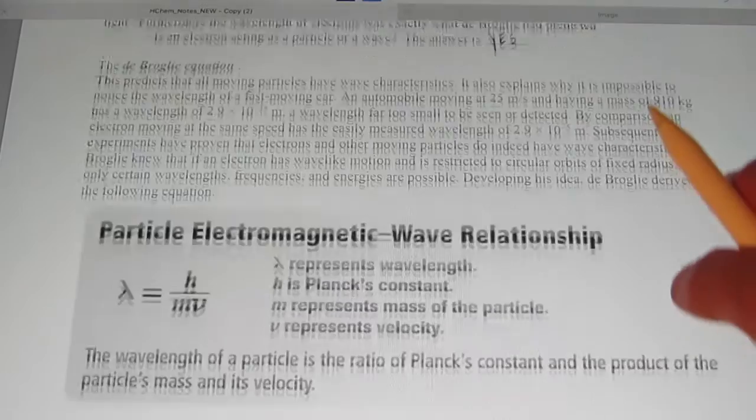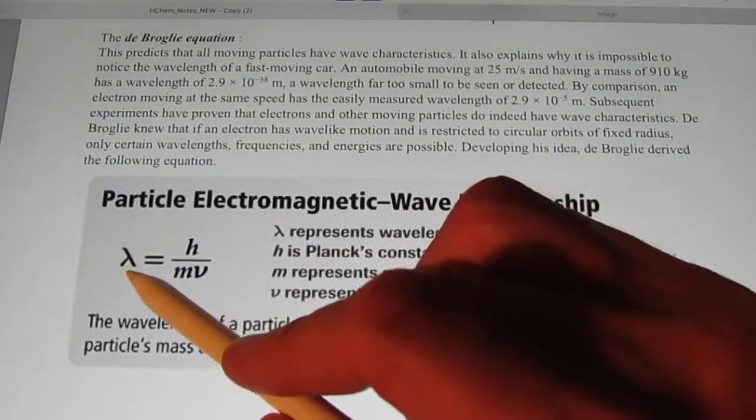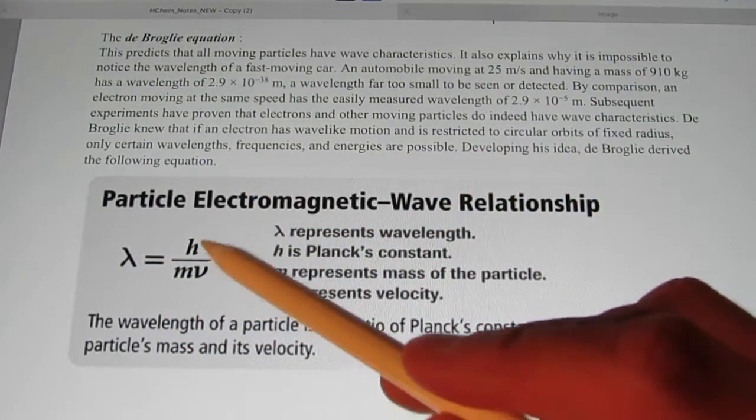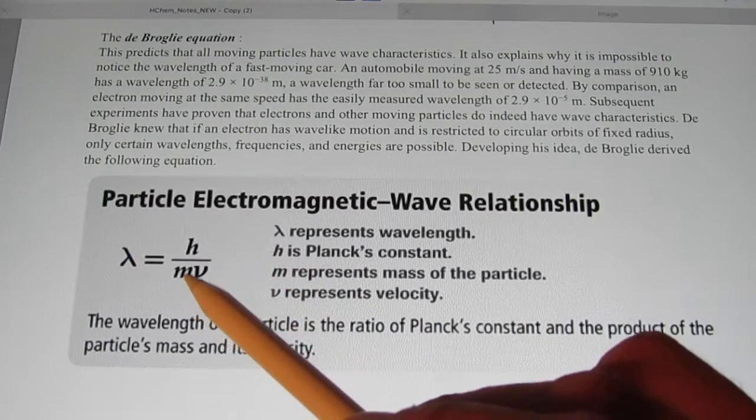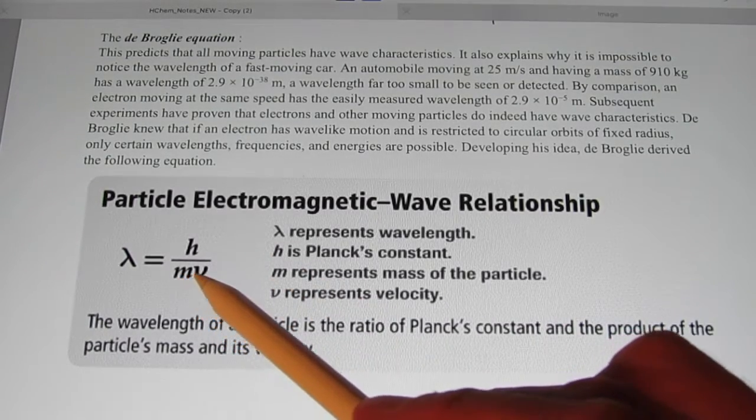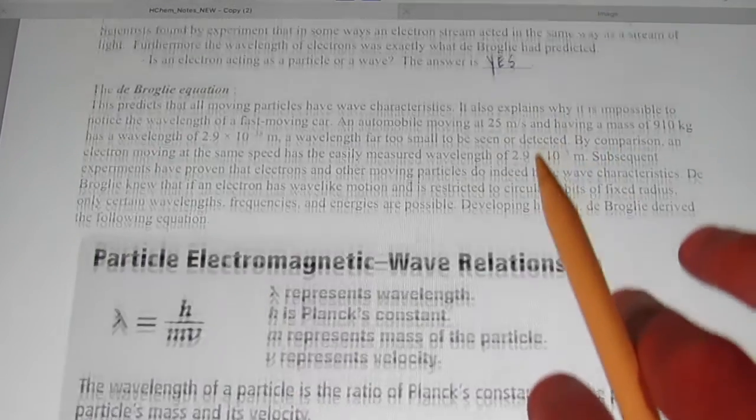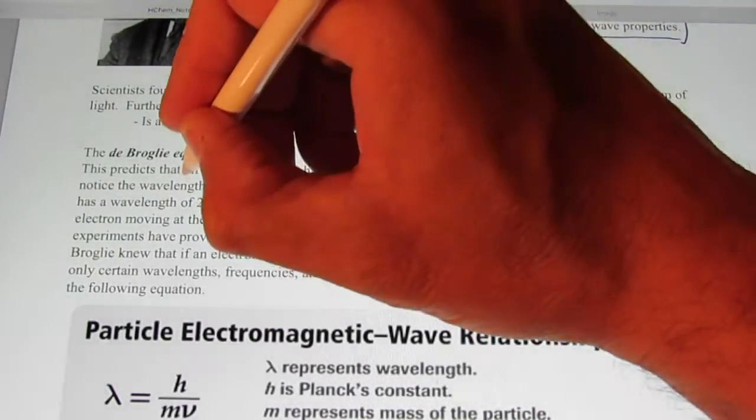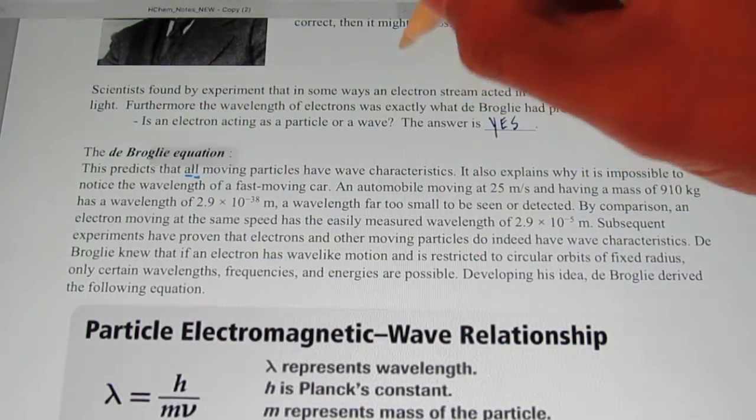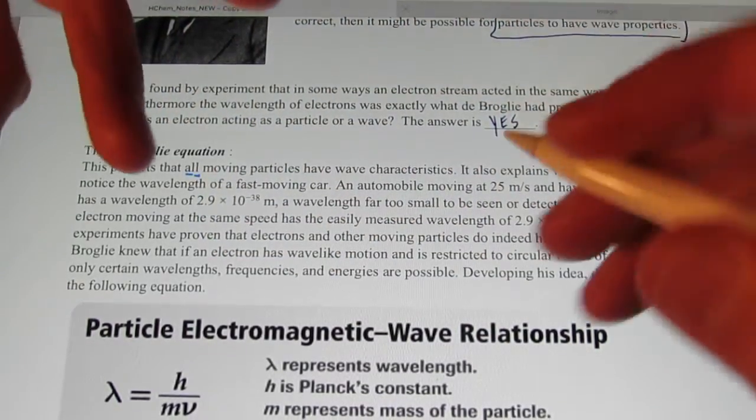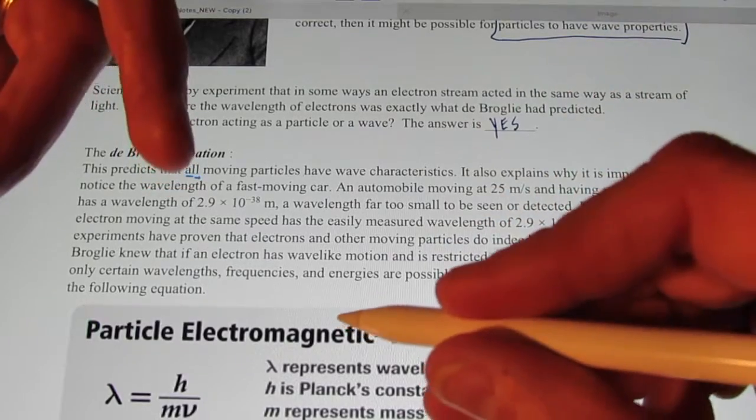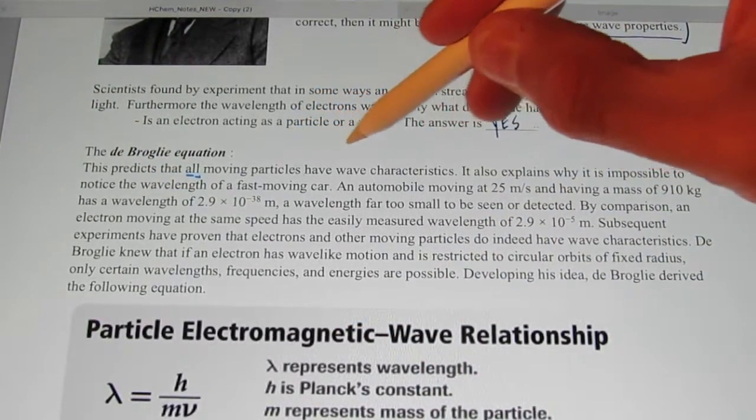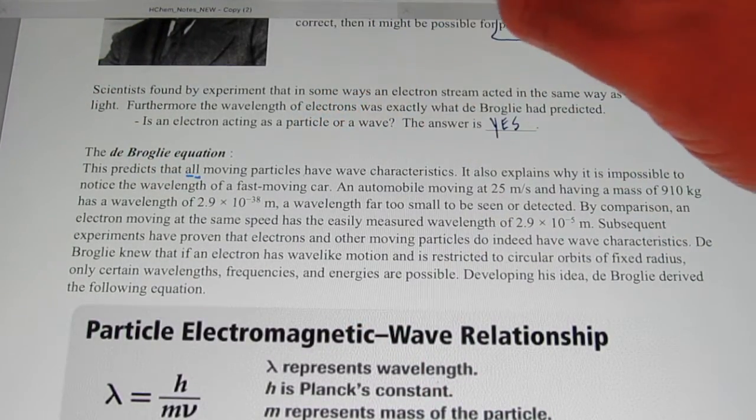So the de Broglie equation, which you're going to see right here, lambda, the wavelength, is equal to Planck's constant, divided by the product of the mass of the particle and its velocity. This equation predicts that all moving particles, that could be a baseball, that could be a car, that could be anything that's moving, an electron, all moving particles have wave characteristics to them.